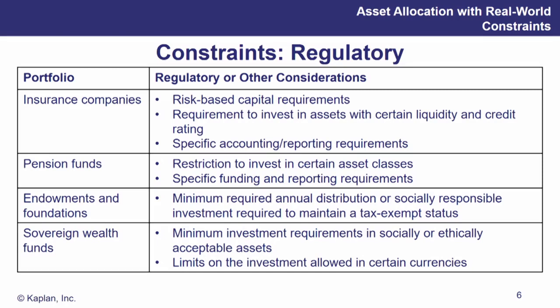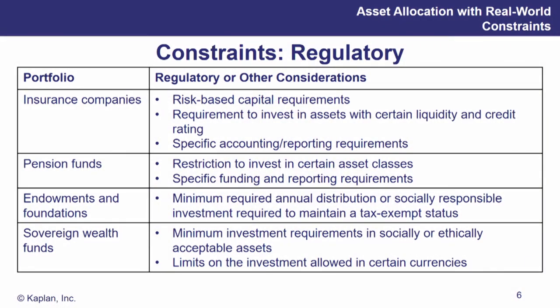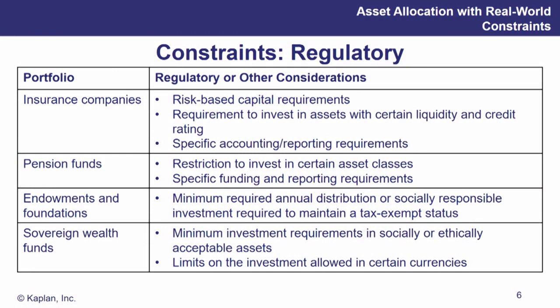Endowments and foundations do have some regulations, but it's a little more freewheeling relative to insurance companies and pension funds. They may have a minimum required annual distribution in order to keep their tax-exempt status — they may have to throw off a certain percentage of cash flow each year to maintain that exemption. Sovereign wealth funds have minimum investment requirements and socially or ethically acceptable asset guidelines on a country-by-country basis. The citizenry and politicians make decisions about what the fund invests in, and there may be limits on the amount, type of investments, and the types of currencies they want to hold.